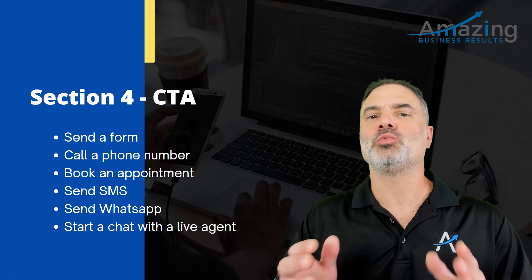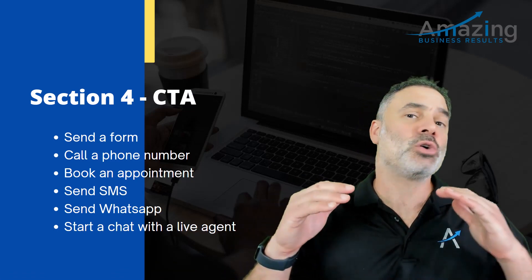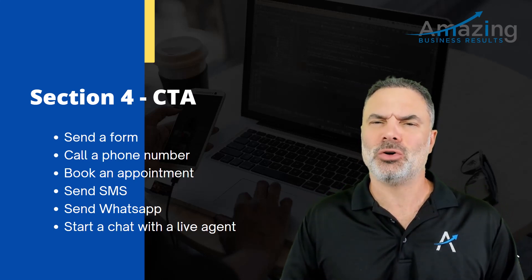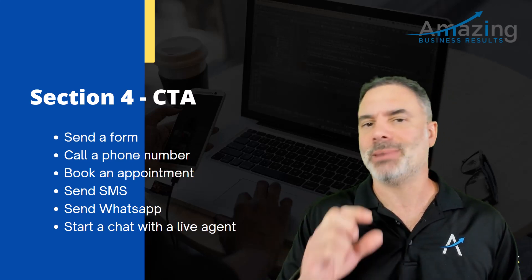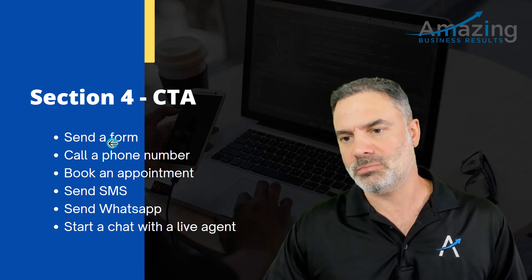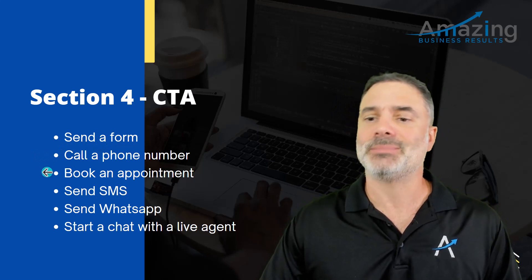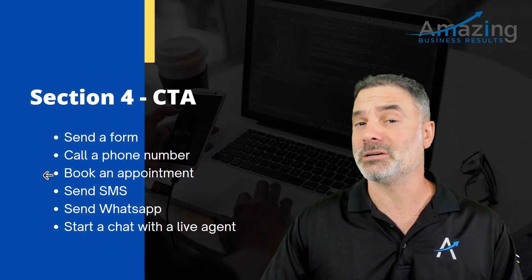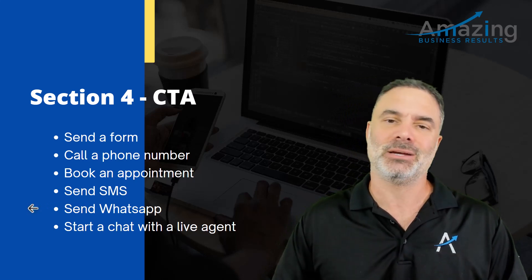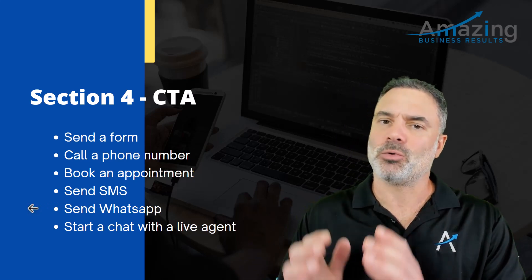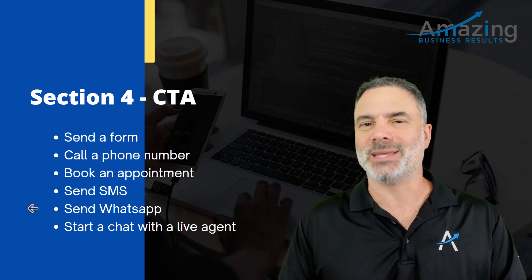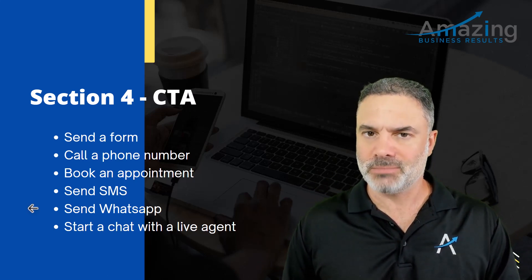Next, we have the call to action. The call to action will be the bottom line — once I've seen that you understand my pain points and can give me value and solve my problem, I will have a call to action button to buy the product. In some cases you will need to send a form, some other cases you will need to call, sometimes you can book an appointment from the page with a calendar, sometimes you will send SMS and WhatsApp, or start chatting with an agent online. The next step is basically the call to action — once the person sees that you understand their pain and can provide the cure for it.